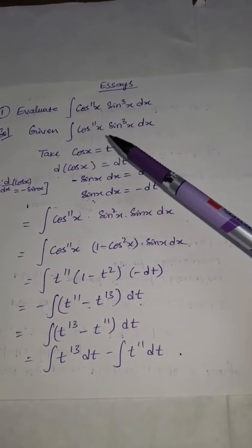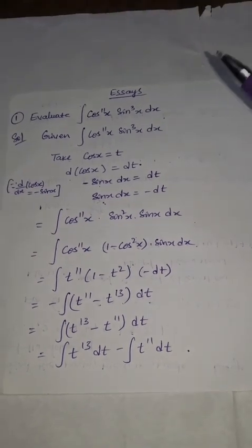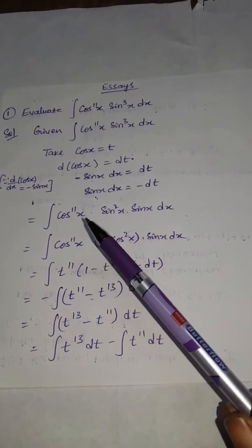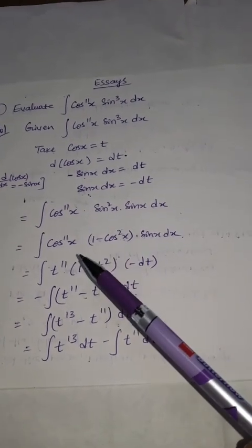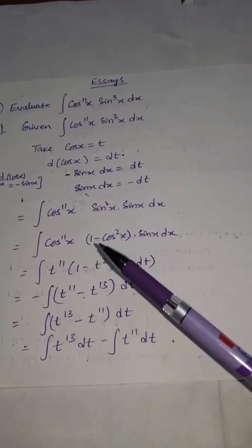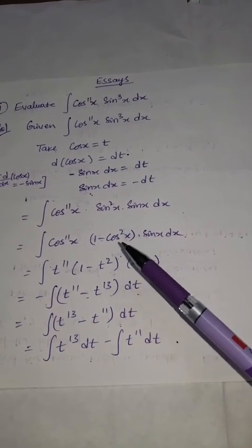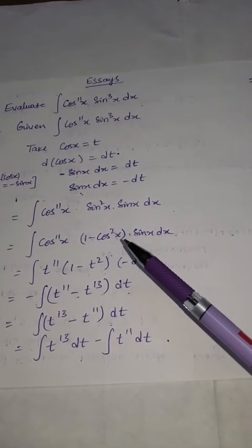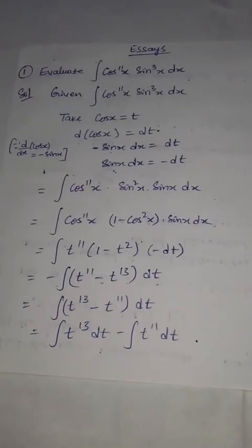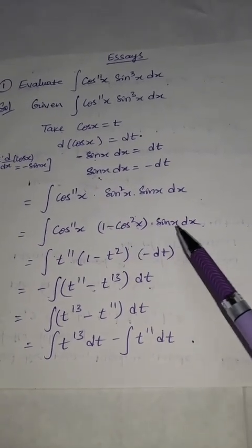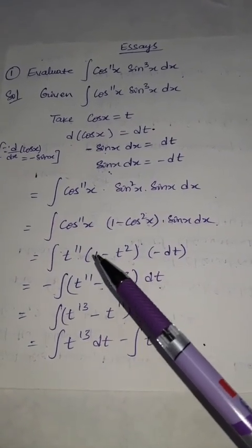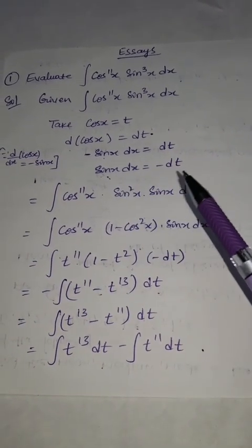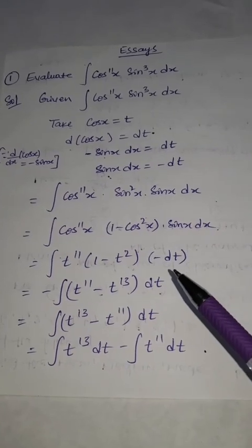We rewrite the integral: split sin³x as sin²x times sin x dx. Then sin²x equals 1 minus cos²x, using the identity sin²x + cos²x = 1. Substituting cos x = t and sin x dx = minus dt, sin²x becomes 1 minus t². So the integrand becomes minus (1 minus t²) · t¹¹ dt.